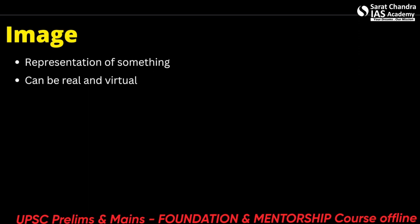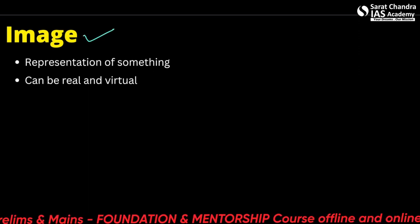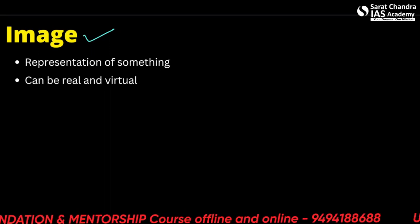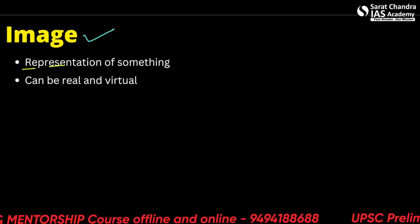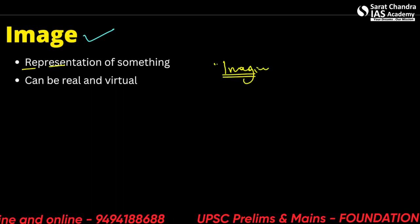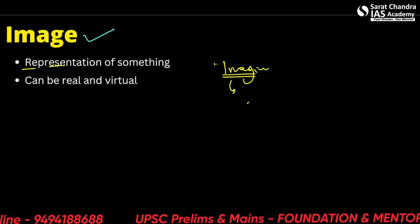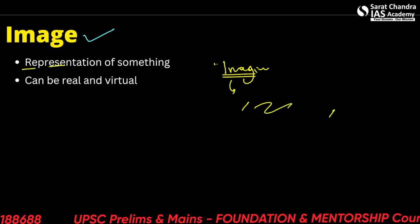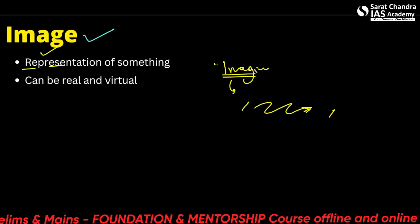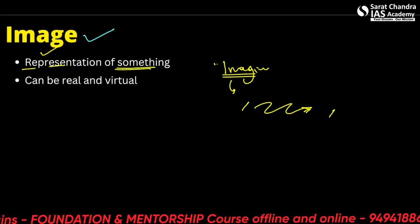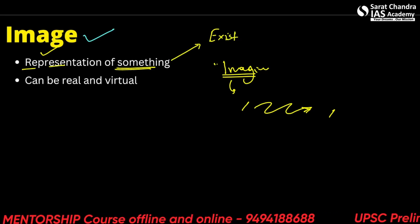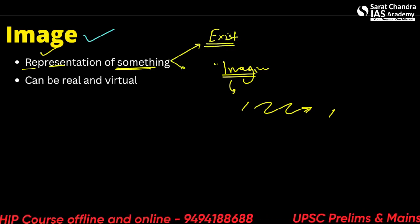The next topic is 'image.' An image is a representation — you may have also heard the word imagination. We see an image of something that may or may not exist right now. An image can be real or unreal, but it is a representation of something that either does or does not exist.